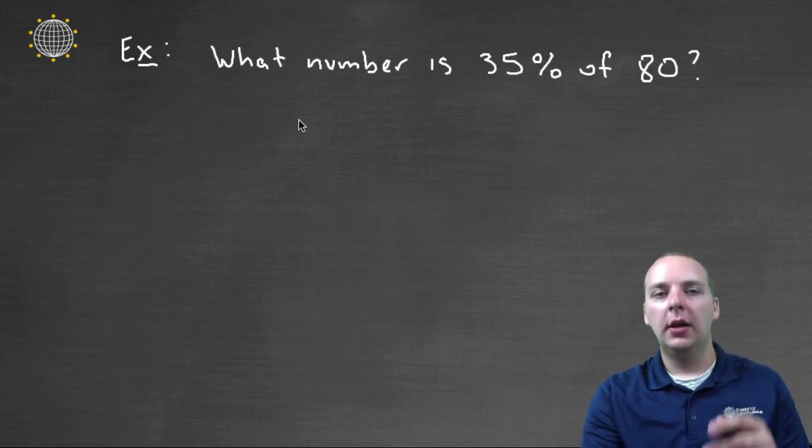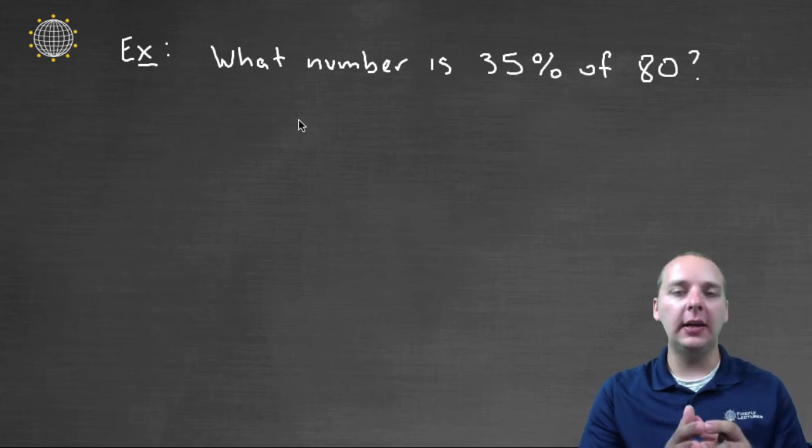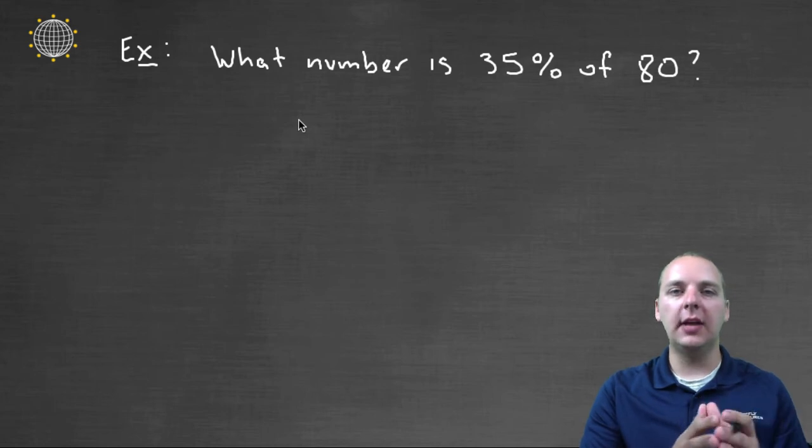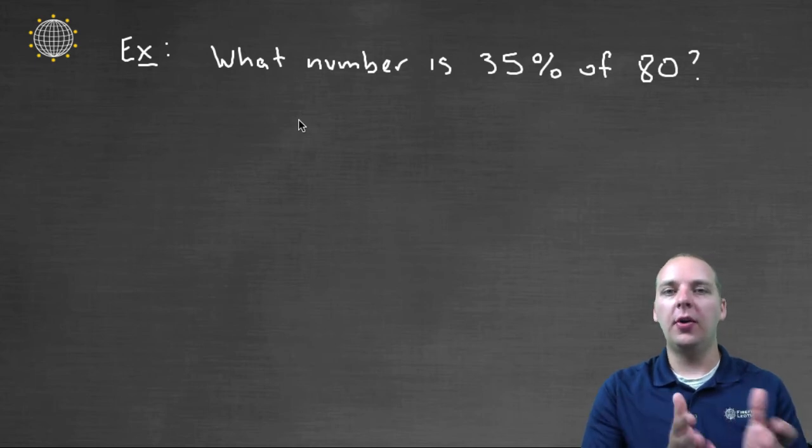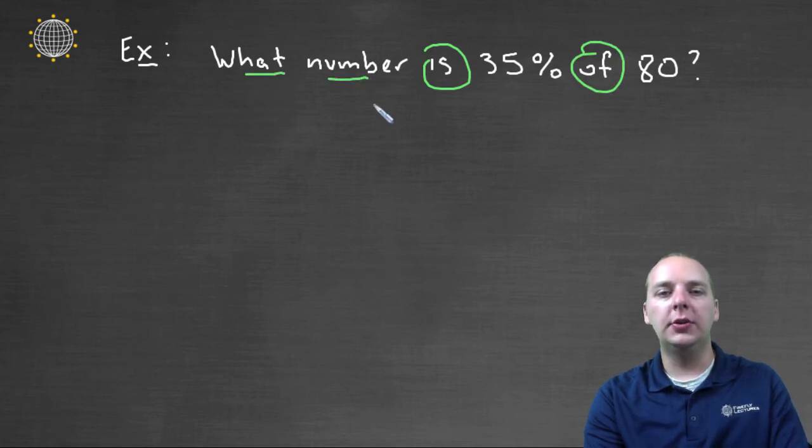Let's try one. What number is thirty-five percent of eighty? Well, if we had not gone through that previous discussion on the last page, this would be really complicated. You just start thinking, gosh, I don't know what thirty-five percent of eighty is. But if we look at these keywords, like is, and of, and what number, we can translate this into a math equation.